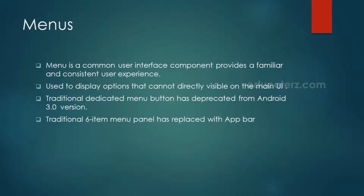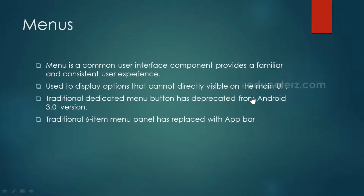Assume if it is not categorized — sometimes in a small shop you'll find a big board with all items listed. So menus create a familiar and consistent user experience, and they are used to display options that cannot be directly visible on the main UI of our application. Traditionally, a dedicated menu button was available up to Android 2.3.3.